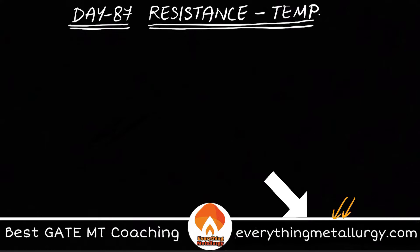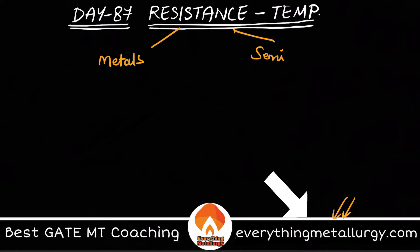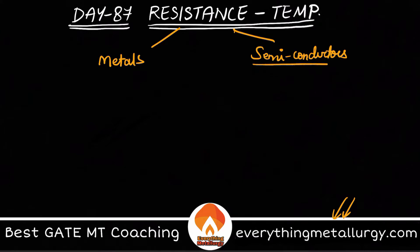Resistance dependence changes by the type of material. We have two important types: number one is metals, and number two is semiconductors. We are not bothered about insulators because we already know that insulators are not able to conduct electricity. I will explain how resistance changes in metals as well as semiconductors using just two equations.